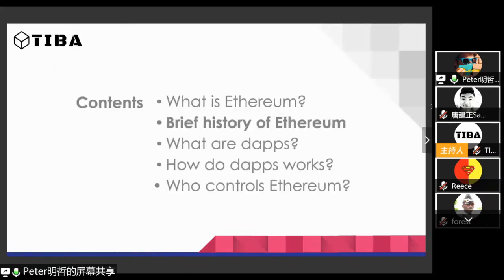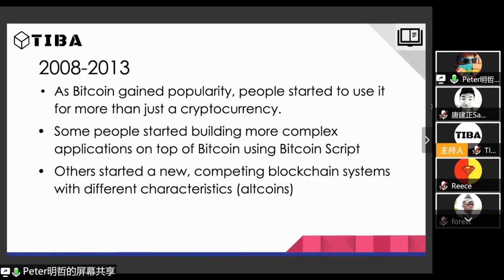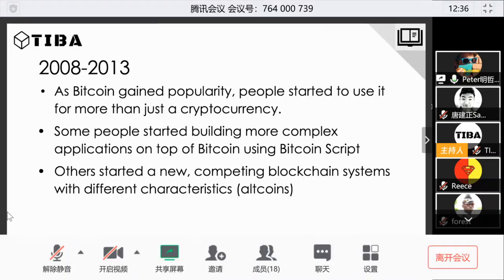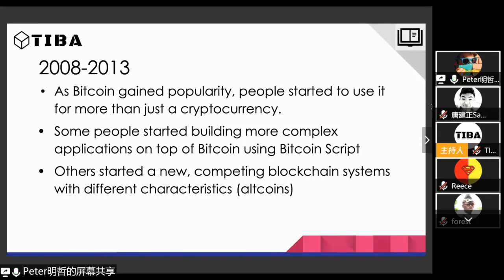Let's look at the history of Ethereum. Bitcoin was first introduced in 2008 with the publication of the Bitcoin white paper, and the network started in 2009. In the next few years, Bitcoin steadily gained popularity, and at some point people started to use it for more than just payments — they wanted to do more with it. There were two different directions: one is Bitcoin Script, which is actually a feature in Bitcoin that lets people write some simple code to extend the capabilities of Bitcoin transactions. The other direction is to start a brand new blockchain — either copy Bitcoin and change some parts, or write a new system — and these are usually called altcoins.